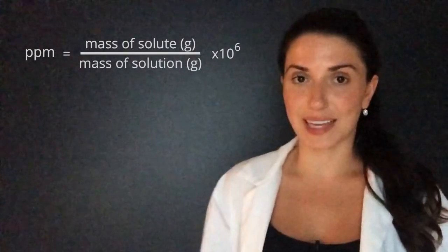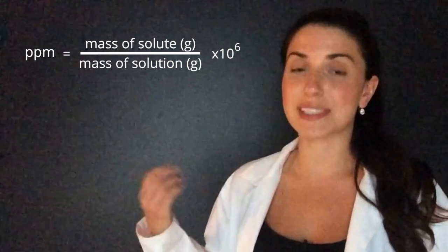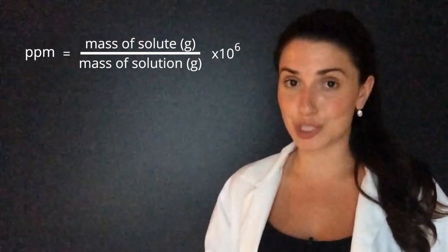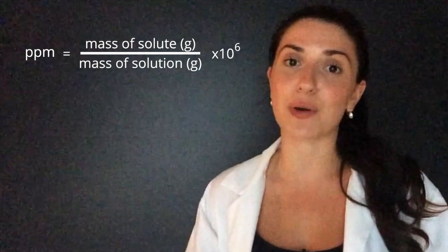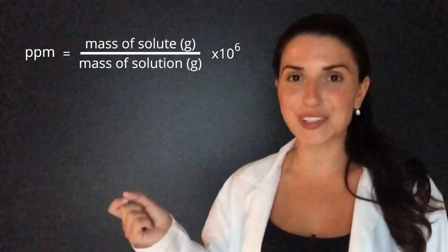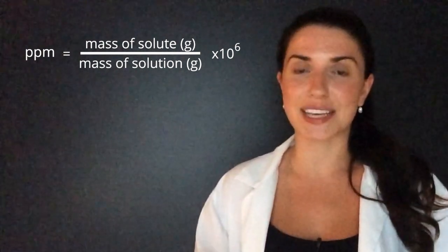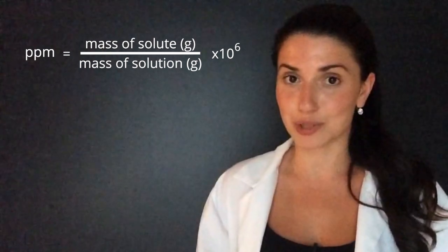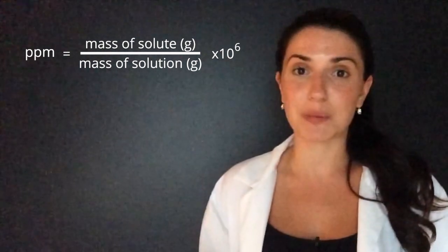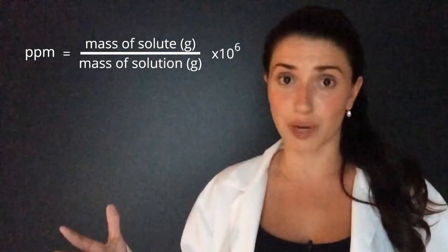Parts per million and parts per billion are just another way to express concentration. The way we calculate parts per million is the mass of the solute in grams divided by the mass of the solution in grams times 10 to the power of 6, which is 1 million. Remember that the solute, which is at the top of the division equation, is the substance that is present in the smaller amount in the solution. We use parts per million when we have a very small solute to solution ratio.